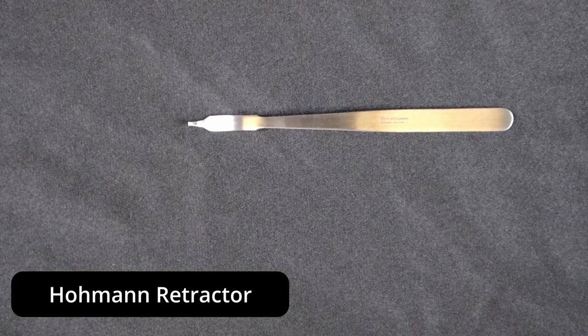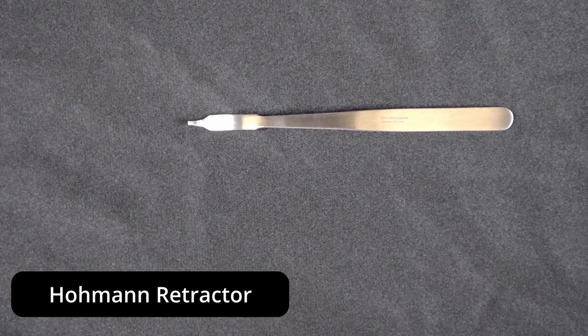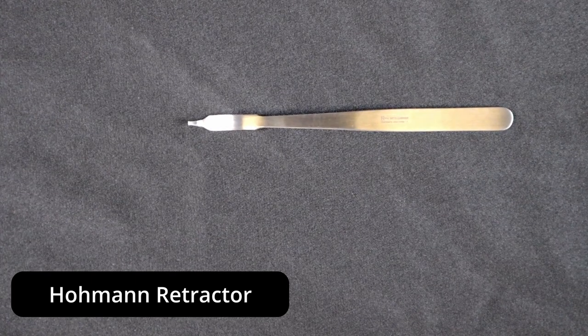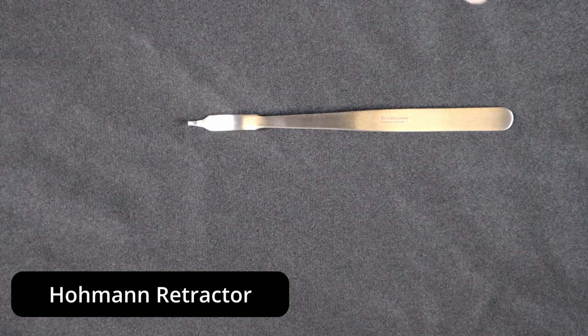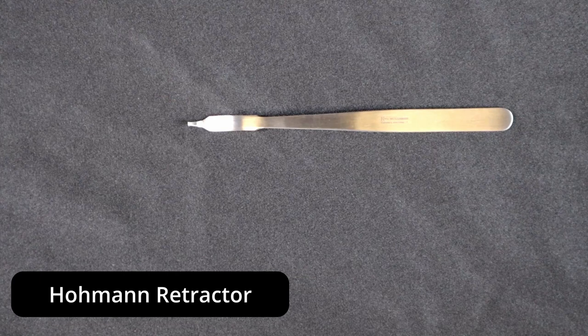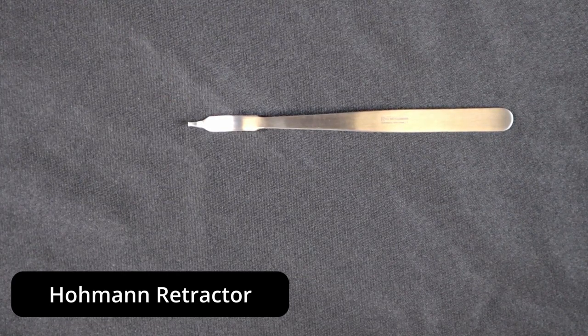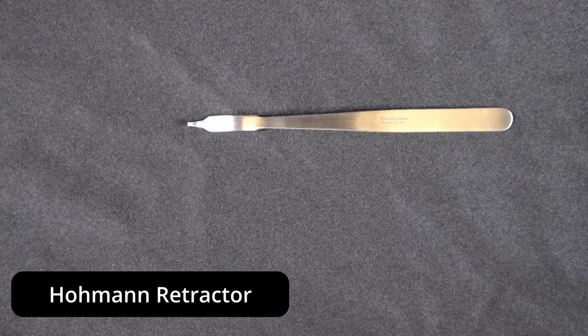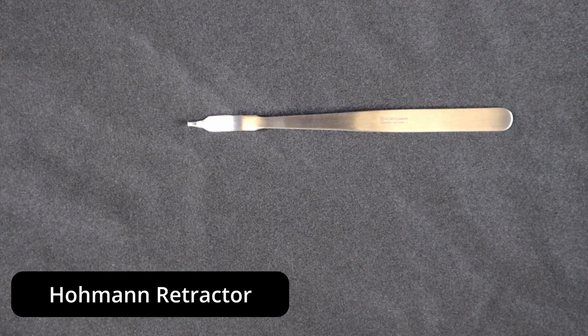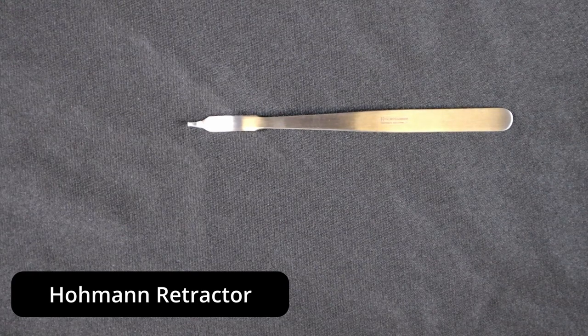All right, again, the one we're looking at today is a short-tipped eight millimeter blade, six and a quarter inches long. That's all for this episode of Hello My Name Is, and that is the Hohmann retractor. Thank you for tuning in again, and until next time, keep fighting dirty.